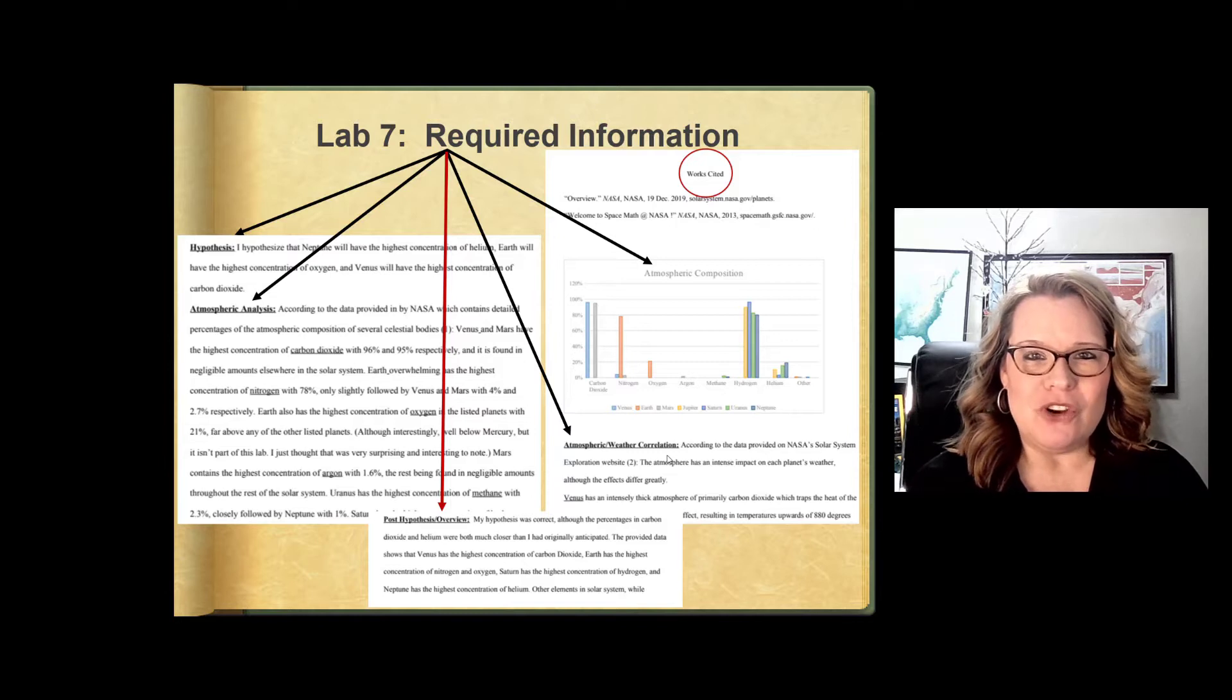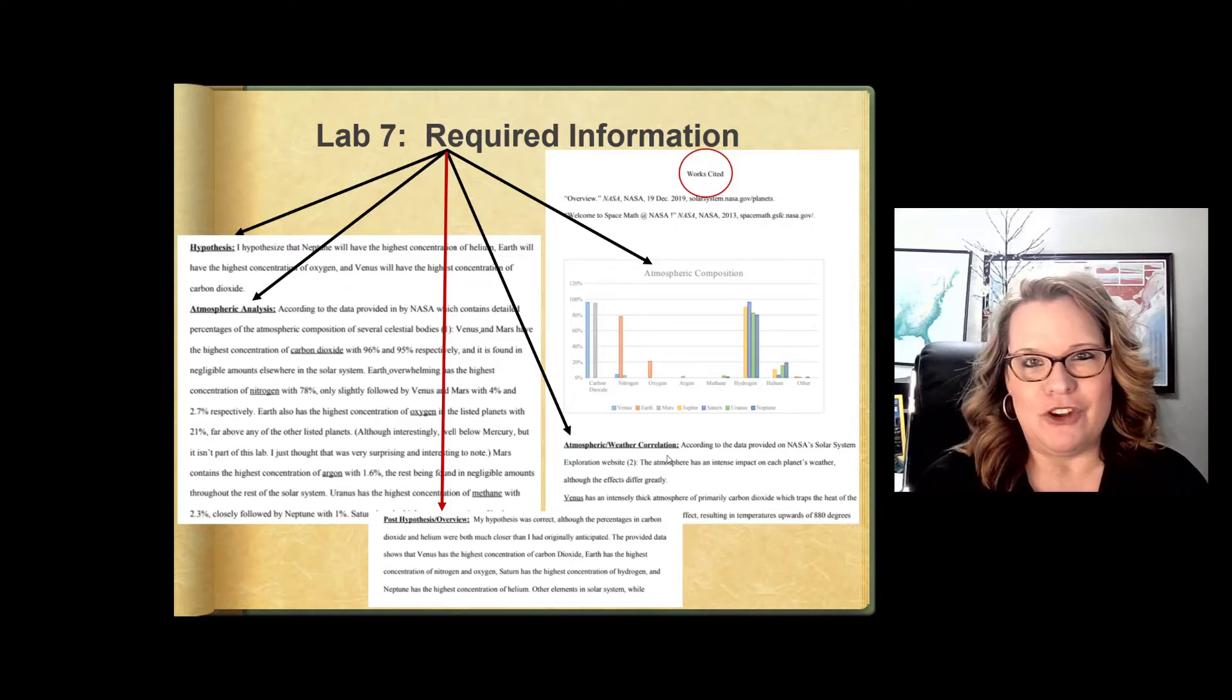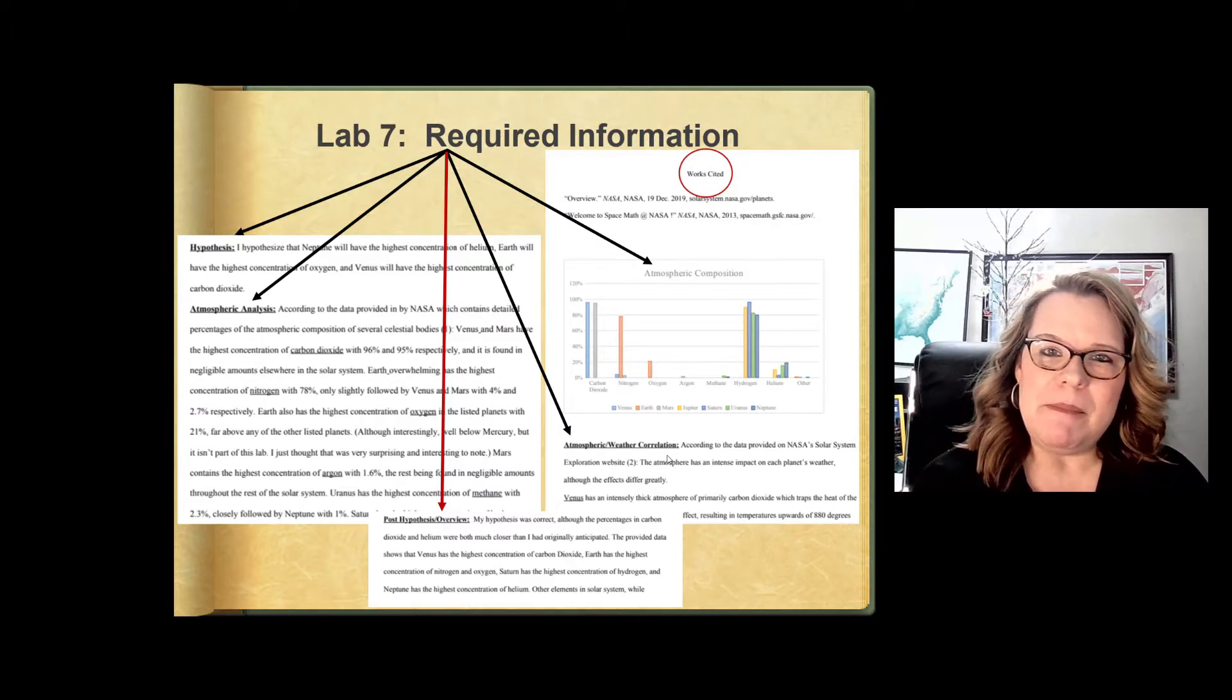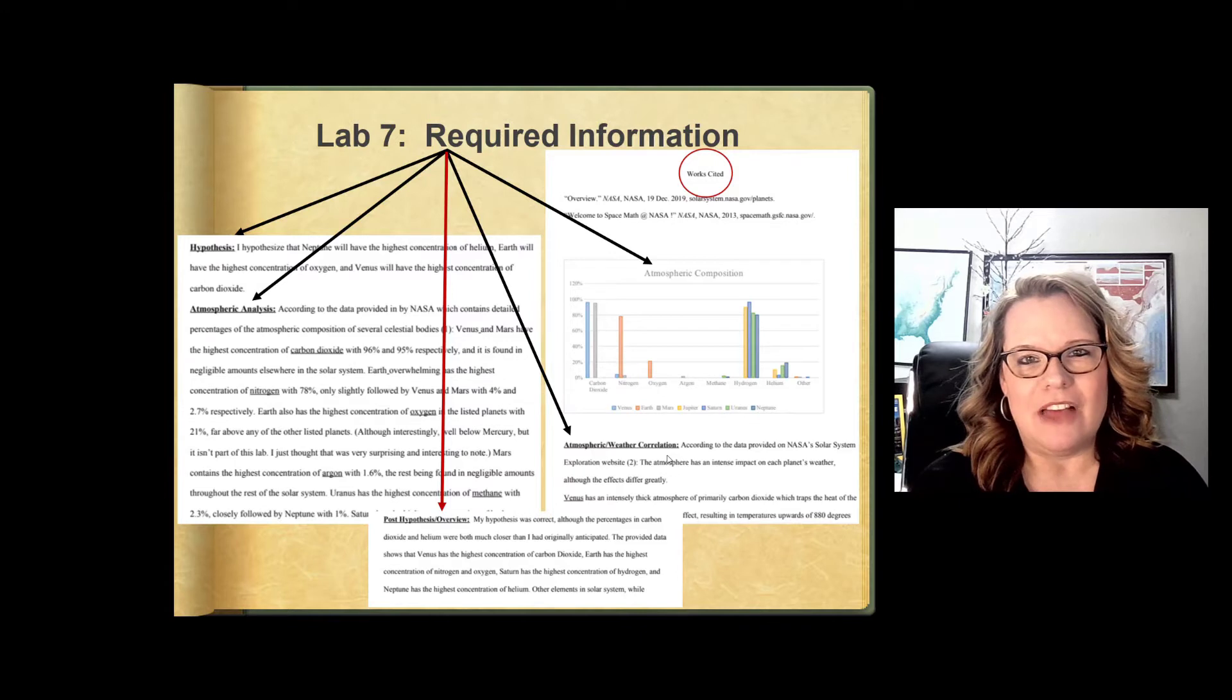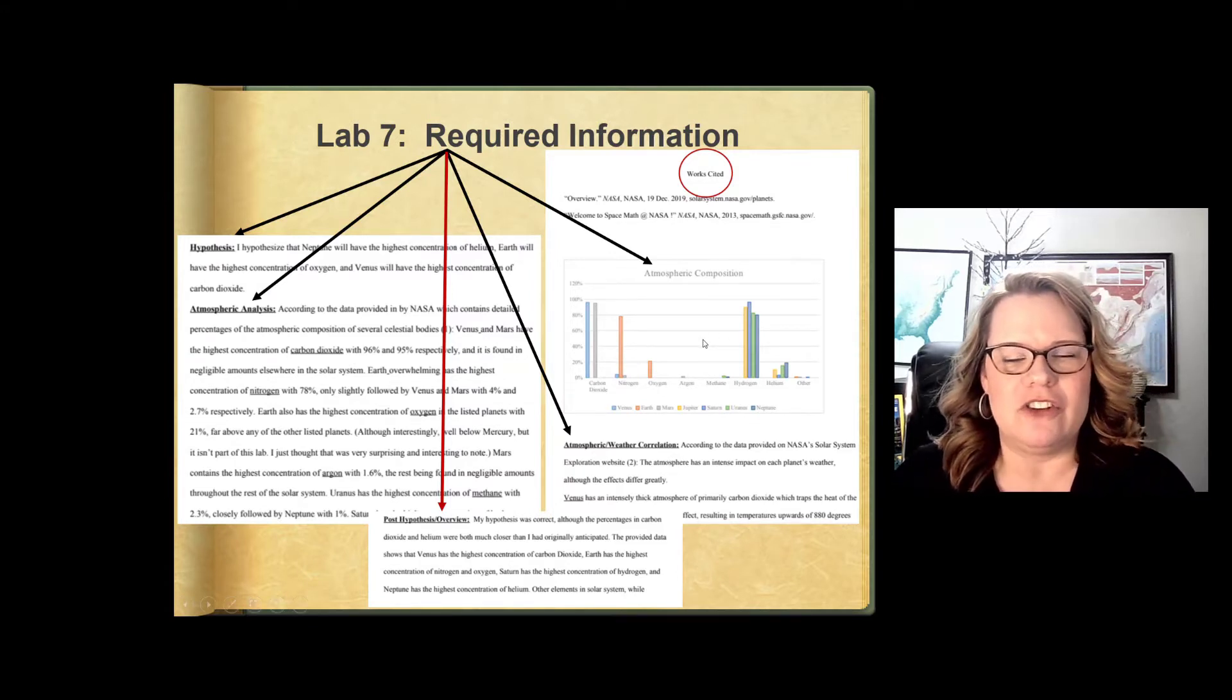Number two is you're going to actually describe the planetary atmospheric compositions by planet, and you're going to compare and contrast how they're different from one another using a chart, an Excel chart.